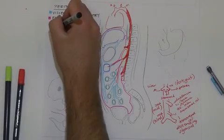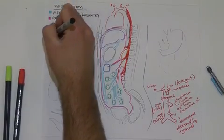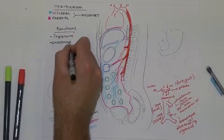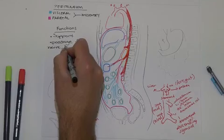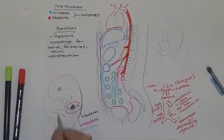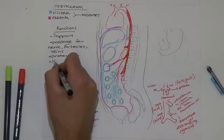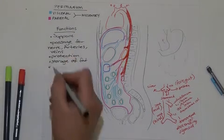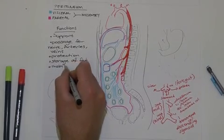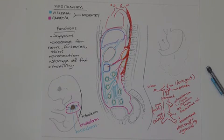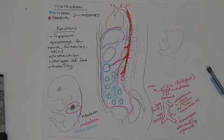To finish, let's write a few functions of the peritoneum. First, it provides support of the organs. Second, it provides passage for nerves, arteries, and veins. Third, it provides protection — for example in the form of the greater omentum. Fourth, it provides storage of fat, which acts as an energy reserve for when it gets cold or you aren't eating. And finally, the peritoneum allows the gut to be mobile, meaning as food passes through the gut it doesn't get tangled up.